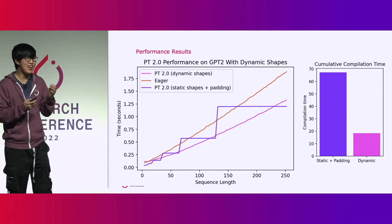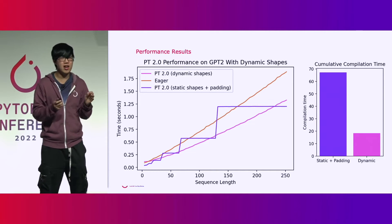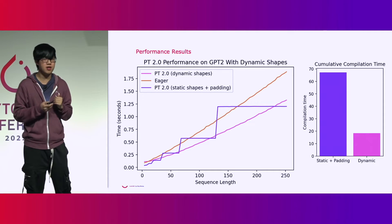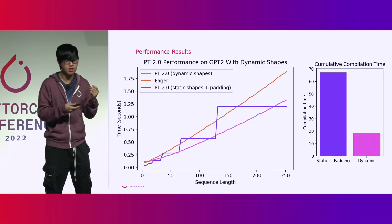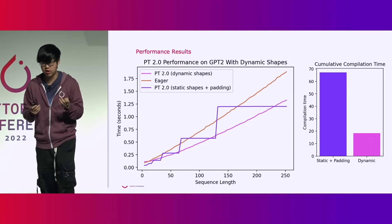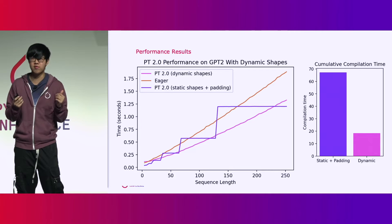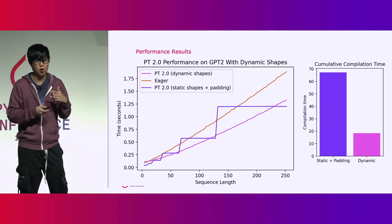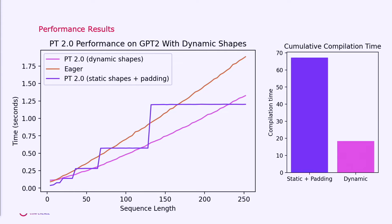Talking about how cool our system is is one thing, but it's good to look at some numbers. One disclaimer: dynamic shapes are still under active development, so these results were obtained on a feature development branch and not master, but we expect all of these to be in master by the release. A very common use case for dynamic shapes is language models with varying sequence length, especially for auto-regressive generation. If you look at the orange line — PyTorch Eager — you can see it grows smoothly with the sequence length and doesn't need to recompile. This is the experience you get today.